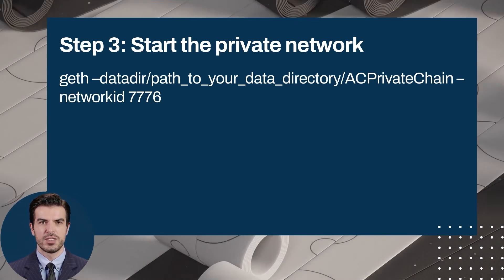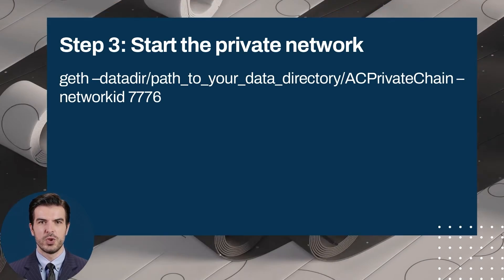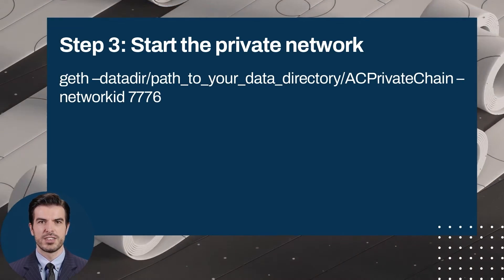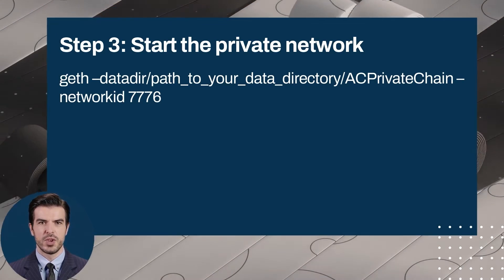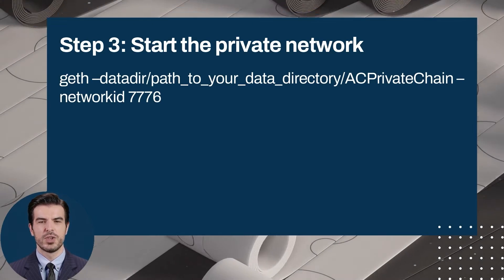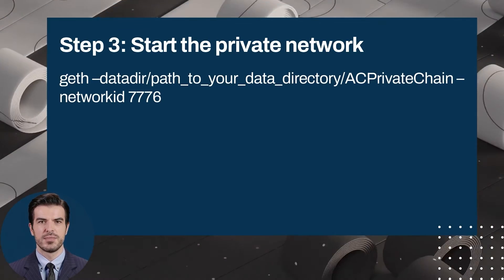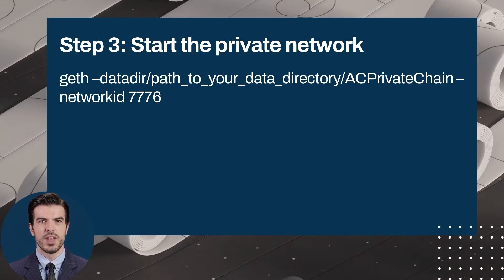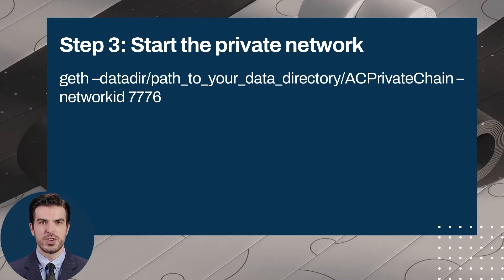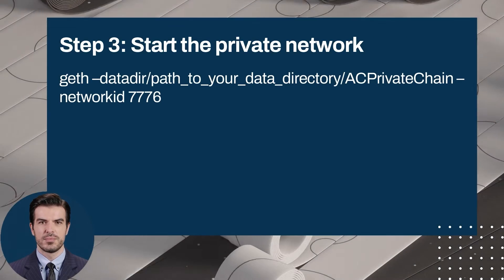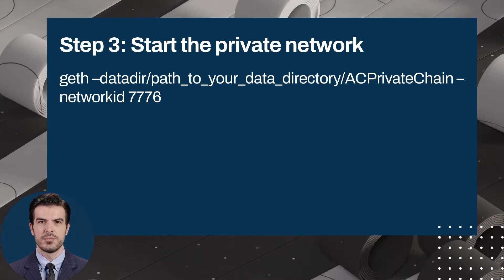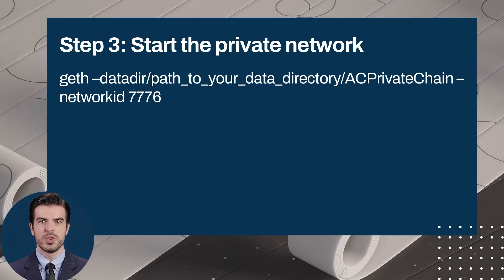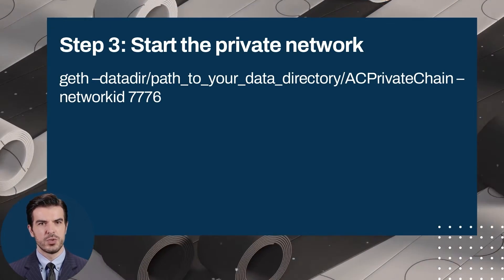When you initiate the specified command with your own identifier, you start your blockchain's private network. Another important point: Geth does not remember the parameters of your private blockchain network, so every time you want to access your private chain, you will need to run commands in the console that initiate a connection to the Genesis file and your private network. Keep them handy so you don't have to look for them every time. If everything is done correctly, by this moment you will have a personal blockchain and a private Ethereum network, and now you can begin to interact with this chain.